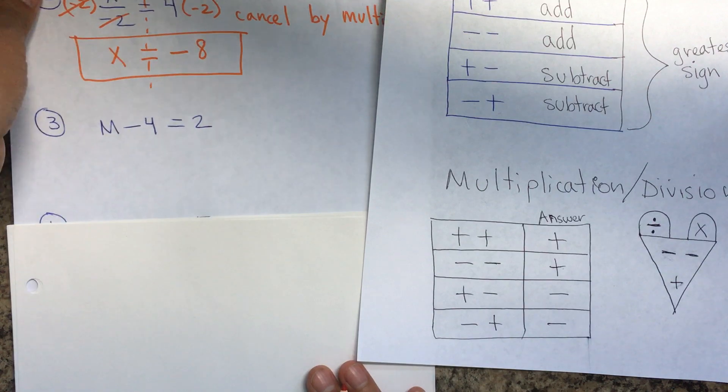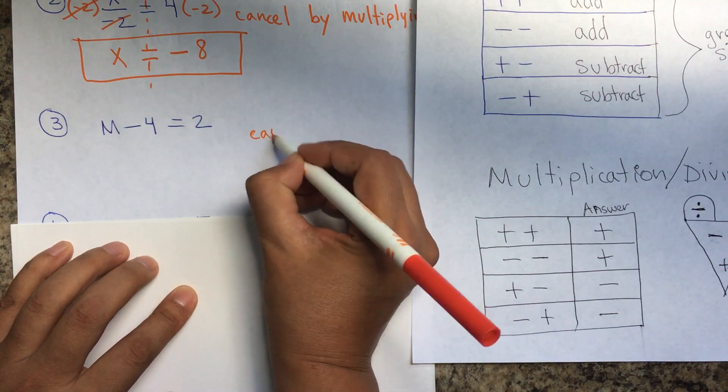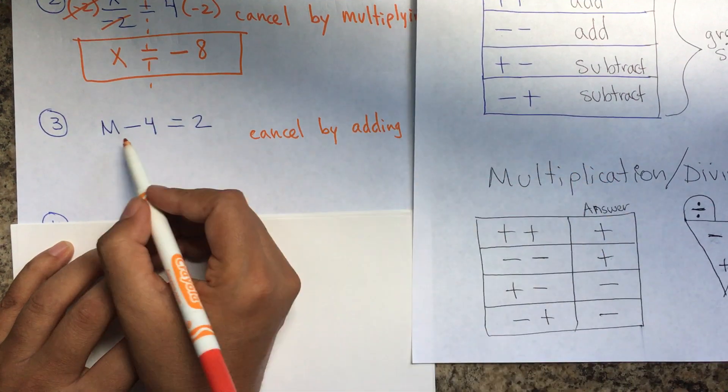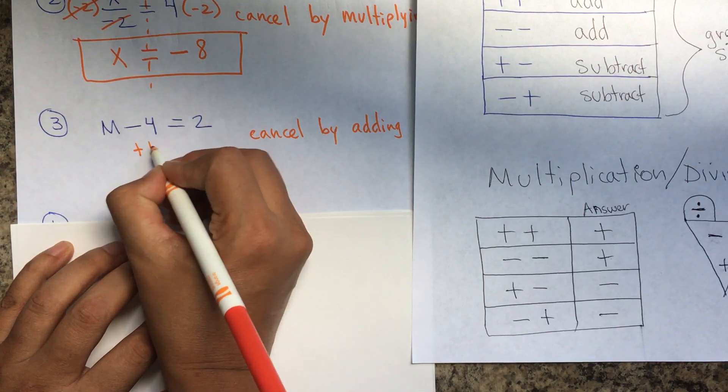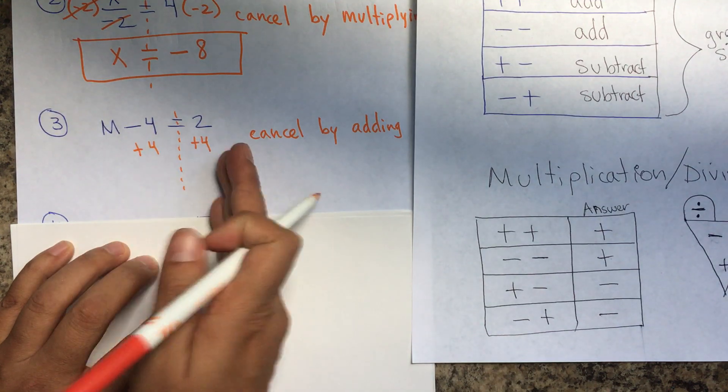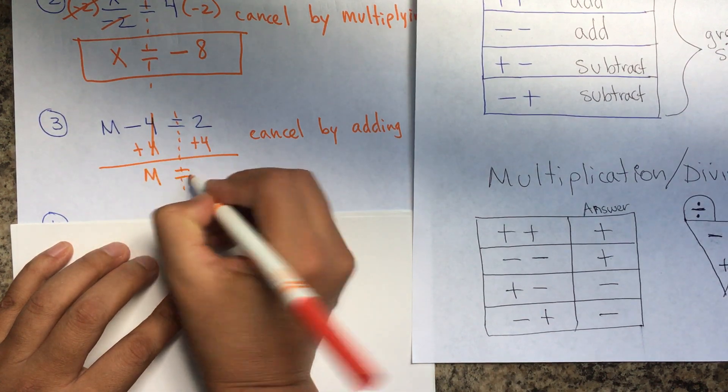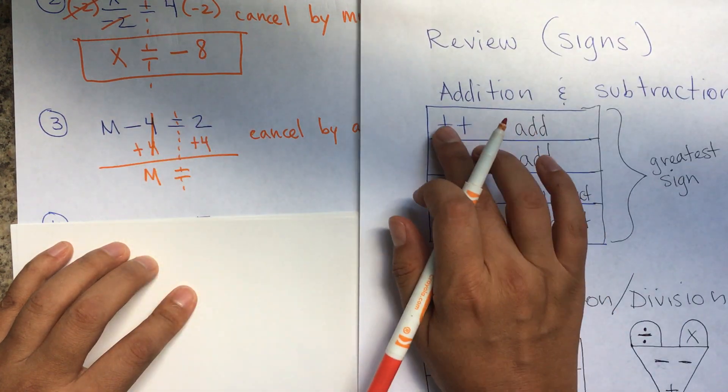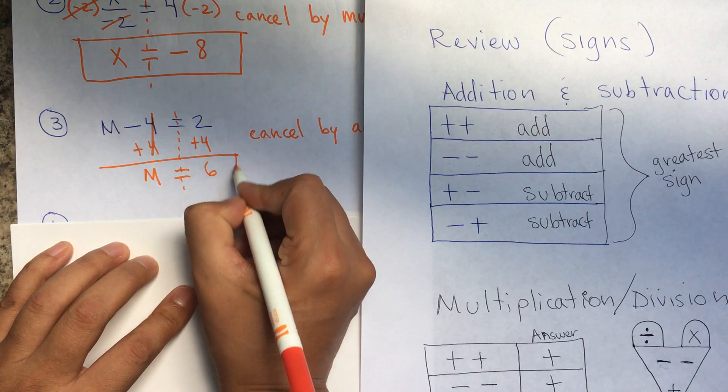Number 3. I'm subtracting 4. What is the inverse operation of subtraction? I'm going to cancel by adding. Just remember, multiplication and division cancel each other. Addition and subtraction cancel each other. So if I'm subtracting, the opposite is to add to both sides. Remember, it has to be 1 on this side and 1 on this side of the equal sign. And so my answer will be M equals, I have two positives, and it's for addition, not division. So when I have two positives, I'm going to add and leave the greatest sign. So 4 plus 2 is 6. And that's it.